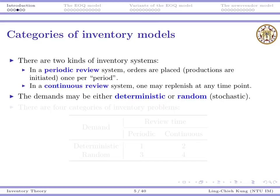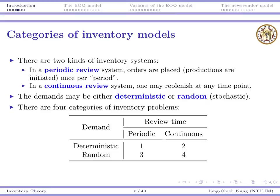So mathematically, depending on whether we set demand to be deterministic or random, there are different models. Combining the two features — review type and demand type — we have at least four kinds of inventory problems: deterministic with periodic review, deterministic with continuous review, random with periodic review, or random with continuous review.